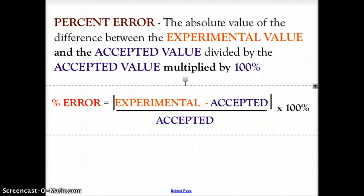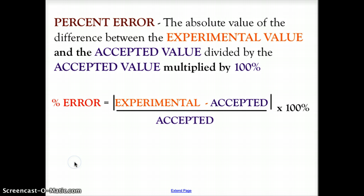That error gives us what we call percent error. Percent error is the experimental value minus the accepted value, divided by the accepted value, then multiplied by 100%. We always want our percent error to be a positive value, so the error is always taken as an absolute value. Percent error equals the absolute value of experimental minus accepted, divided by accepted, multiplied by 100.